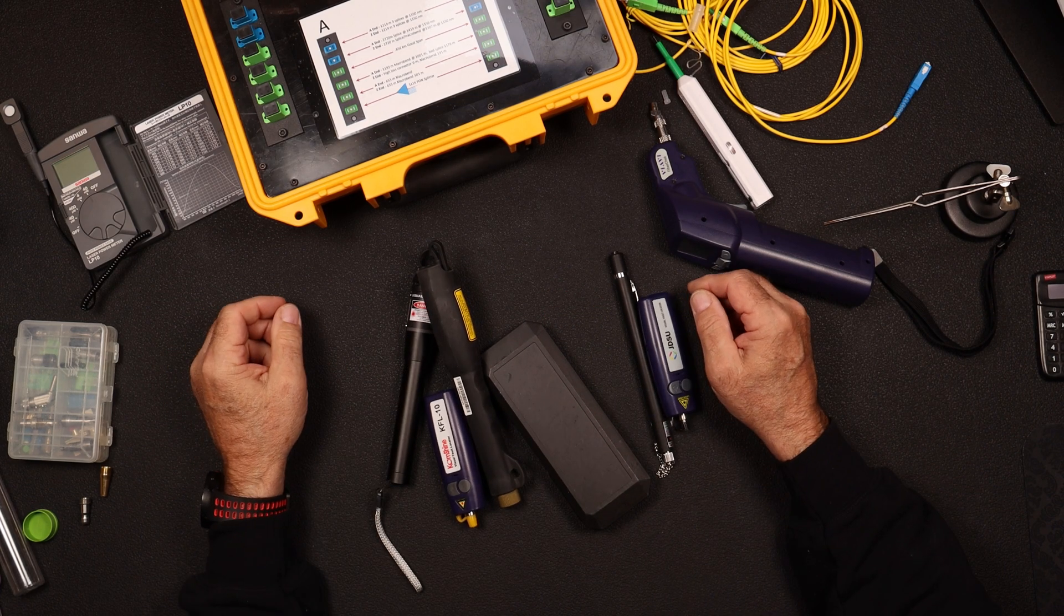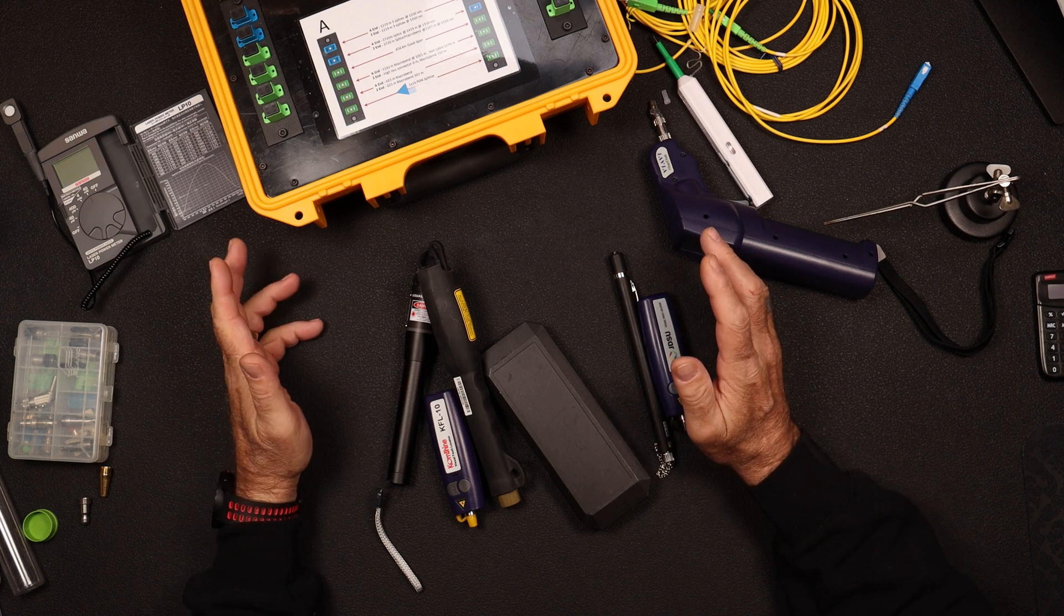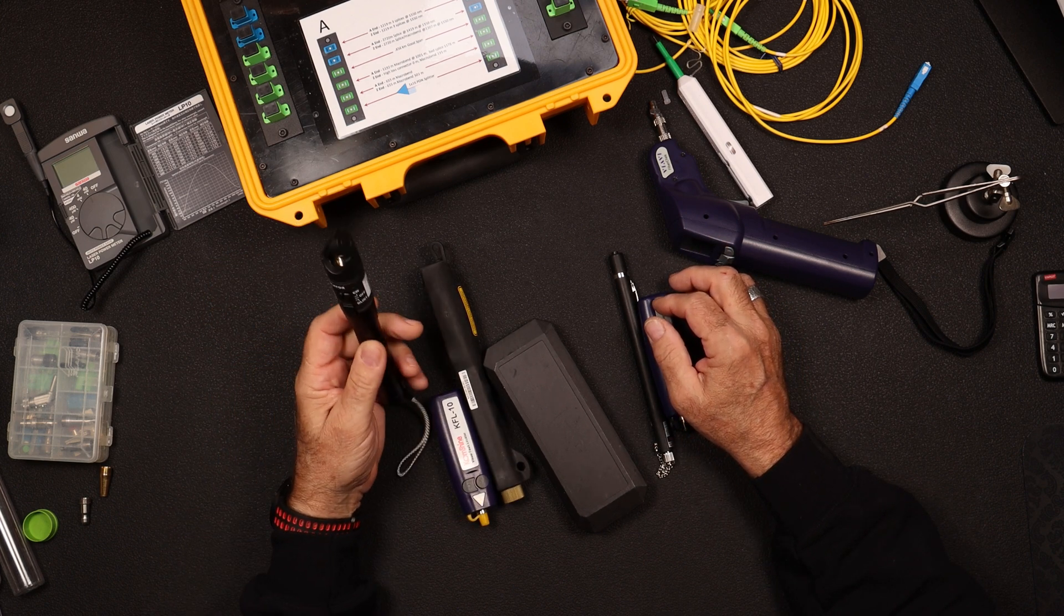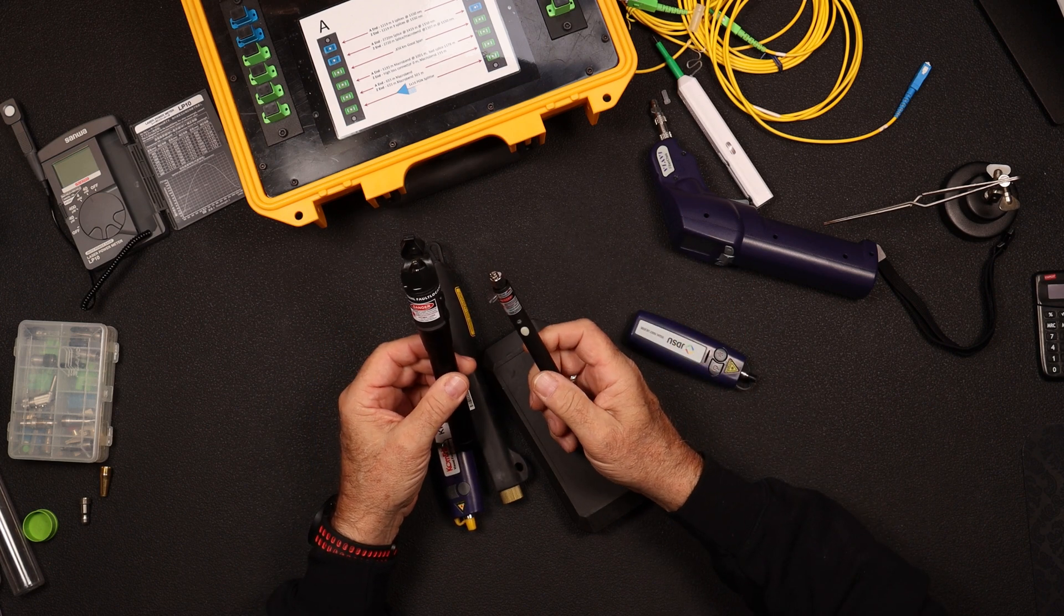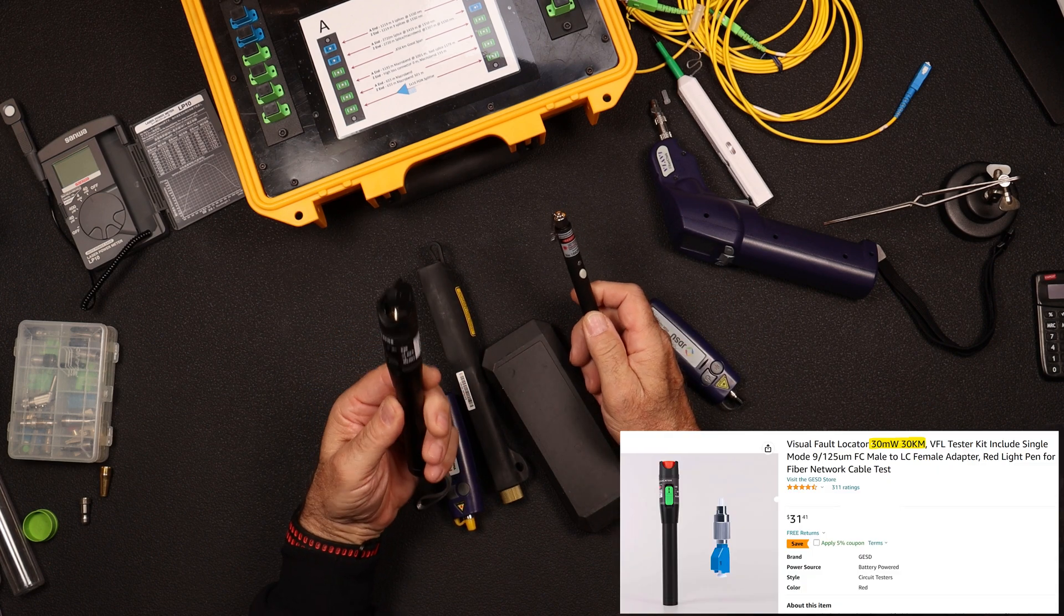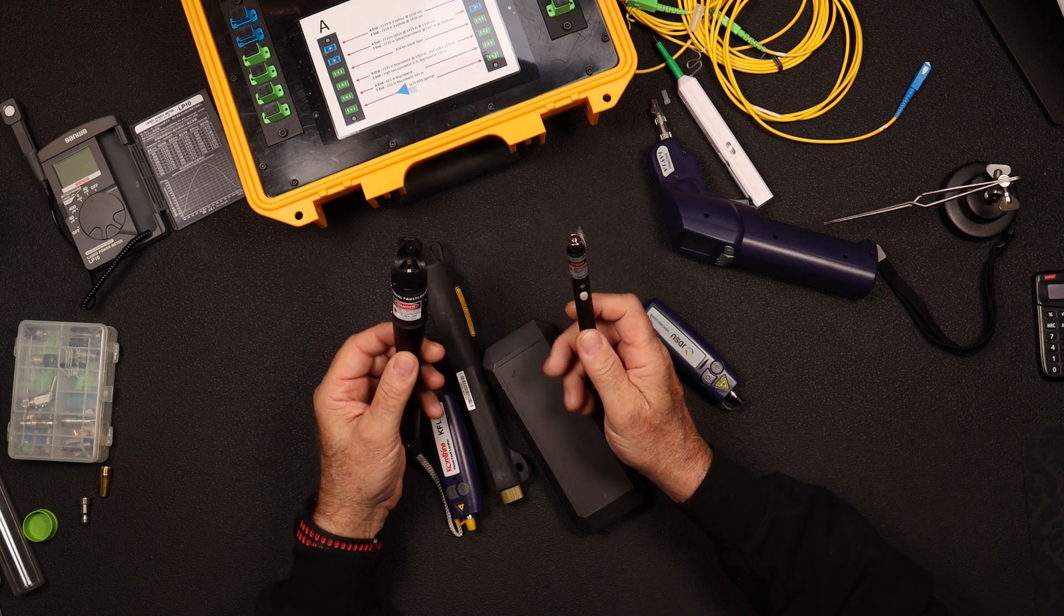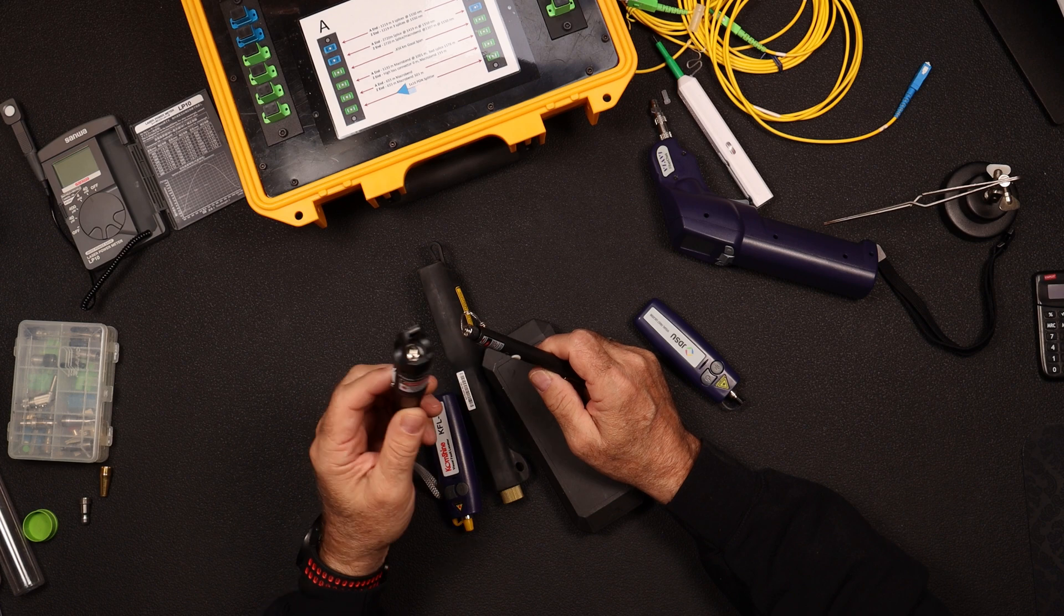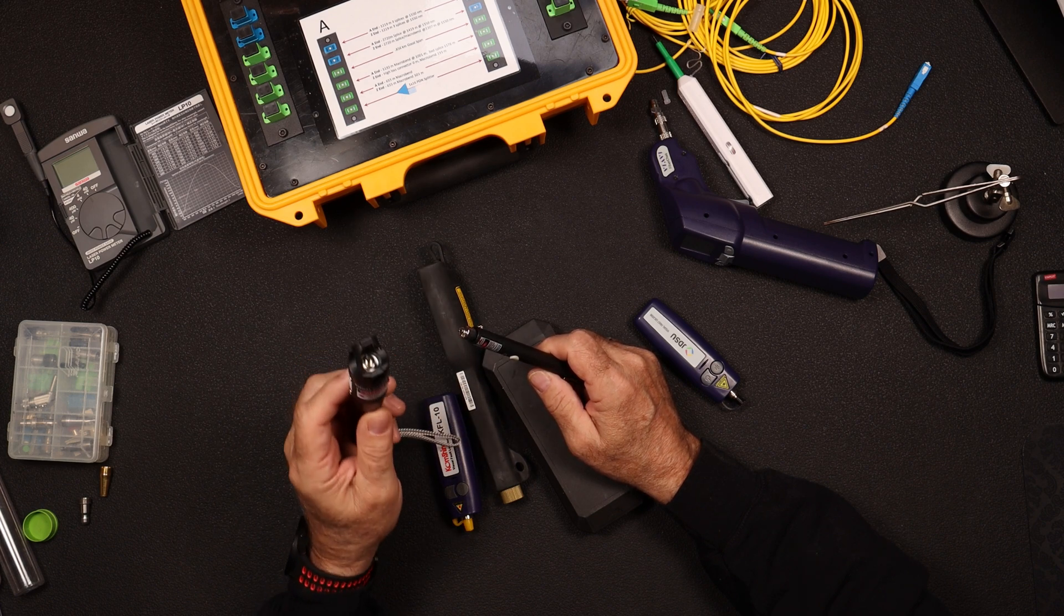Visual Fault Locators. We're going to talk about these guys today, specifically these guys. These visual fault locators are advertised as 20 milliwatt and 30 milliwatt. These are high-powered visual fault locators guaranteed to work to 30 kilometers. Want to know the answer to that? Stick around.